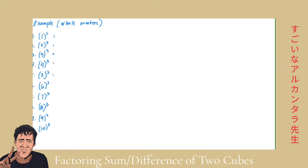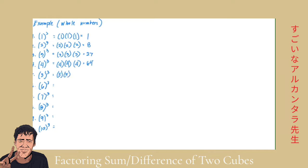1 raised to 3: we use 1 as a factor 3 times, giving us 1. For 2 raised to 3, that's 2 times 2 times 2, which gives us 8. For 3 raised to 3, that's 3 times 3 equals 9, times 3, giving us 27. For 4 raised to 3, that's 4 times 4 equals 16, times 4, giving us 64. And for 5 raised to 3, that's 5 times 5 times 5, giving us 125. Then 6 times 6 is 36, times another 6 gives us 216.